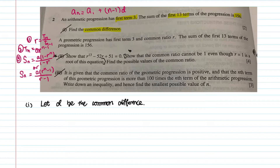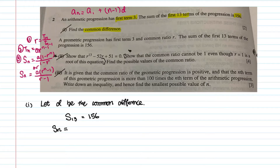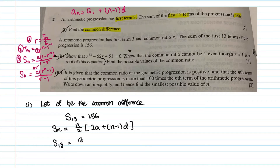You have the total of the first 13 terms, which is S₁₃ equals 156. The sum formula for an AP is: Sₙ = (n/2)(2a + (n−1)d). This is a formula you have to remember — it's not given to you. So S₁₃ equals 13/2 times...